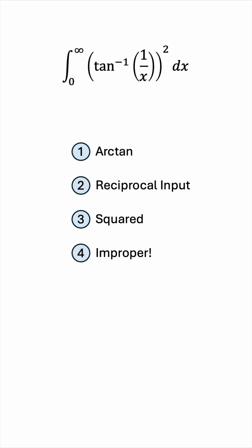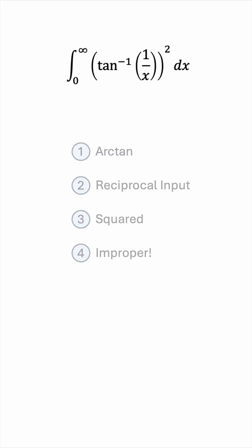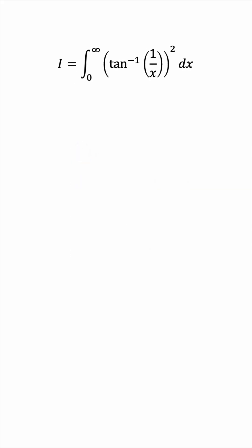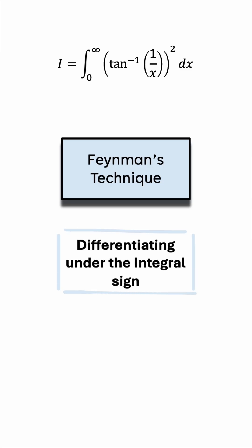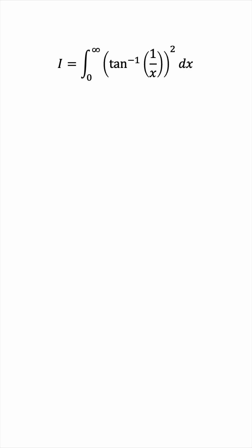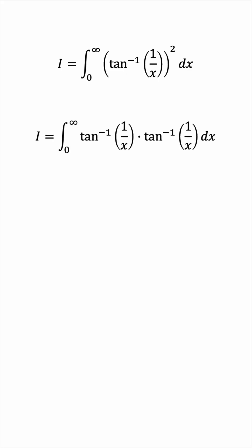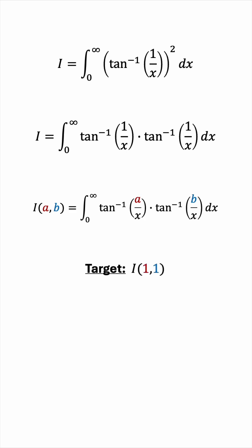Where do we even start? Let's begin by calling the integral I. We will use Feynman's technique of integration, which some people like to call differentiating under the integral sign. Before we start, let's decompose the square we have into a product of two equivalent terms. Then we'll introduce two parameters, a and b, such that we have the function I(a, b). The original integral is now a specific case of this when a and b are equal to 1.